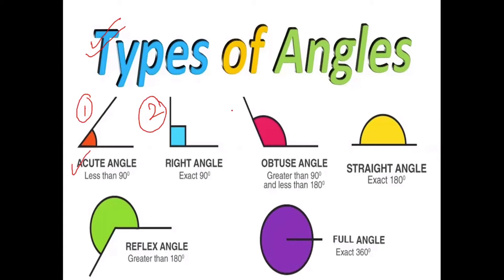There are six types of angles: acute angle, right angle, obtuse angle, straight angle, reflex angle, and full angle.